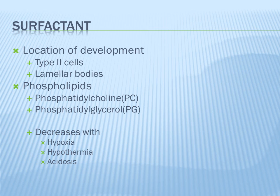Surfactant is composed of different lipids, proteins, and phospholipids. The two main phospholipids are PC (phosphatidylcholine) and PG (phosphatidylglycerol). Both need to be present, with PG at a ratio of 2 to 1 over PC, in order for it to be considered mature surfactant. PC develops around 24 weeks gestation and PG around 35 weeks gestation, so mature surfactant is not expected until about 35 weeks. Surfactant production decreases when the fetus experiences hypoxia, hypothermia, or acidosis.